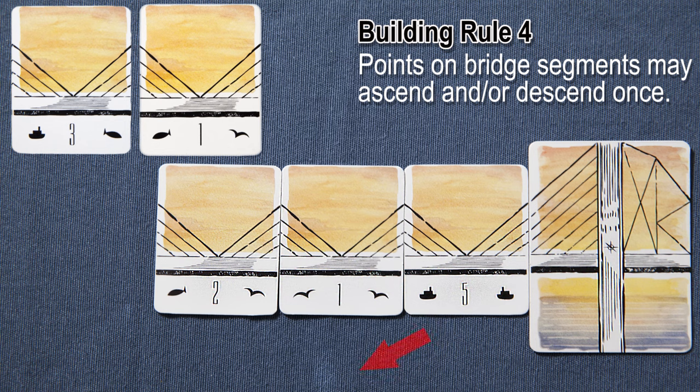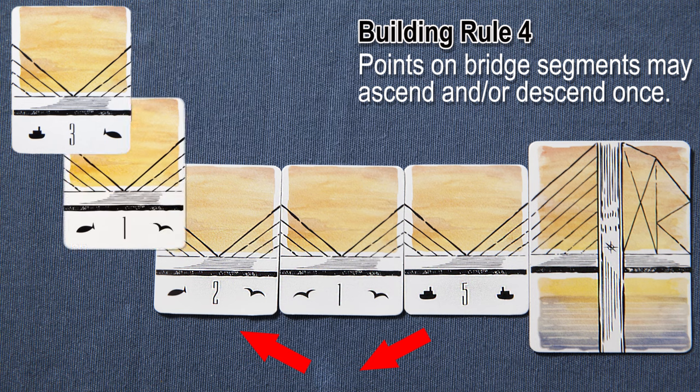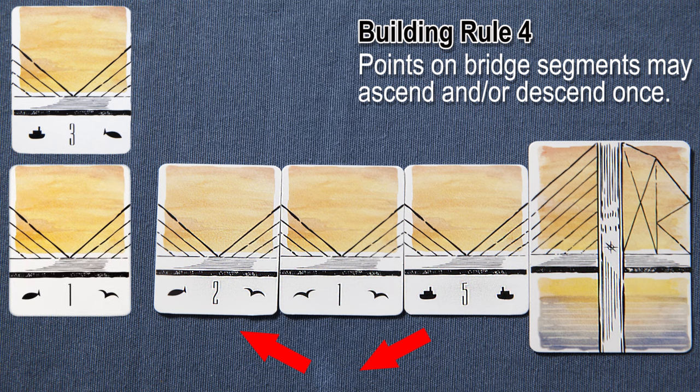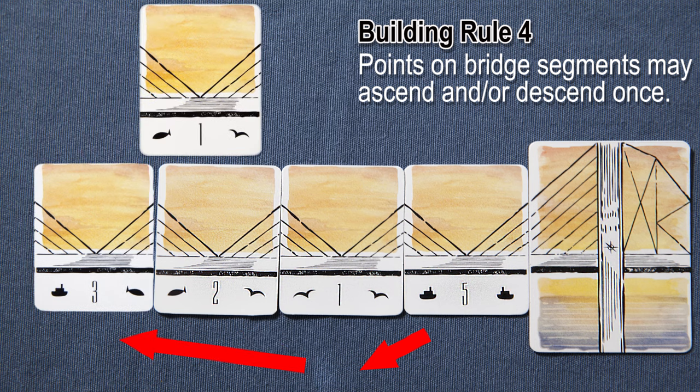Here's an example. This bridge descends first from the five to the one, then begins ascending from the one to the two. The bridge cannot descend again with the one, but it can continue to ascend with the three.